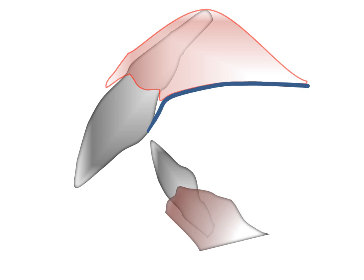Upon verifying seating of the framework in the patient, a light-cured record base is constructed with a wax occlusion rim at the correct vertical. A jaw relation record at the retruded position is made, and artificial teeth are selected for shade and form.